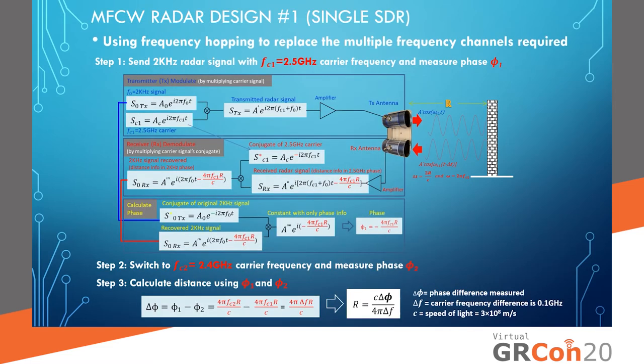My first MFCW radar design used a single SDR. The idea was to get onto multiple frequency channels for my MFCW by hopping between the needed frequencies with a single SDR.